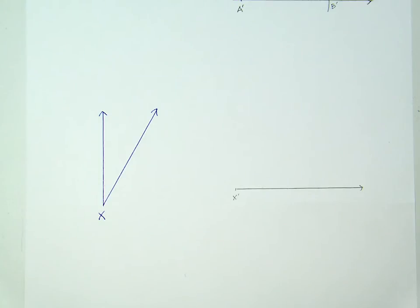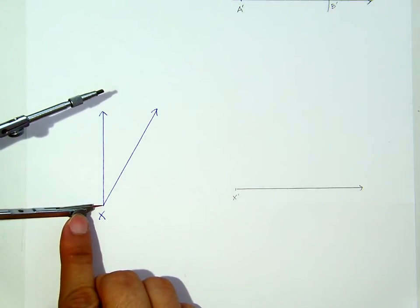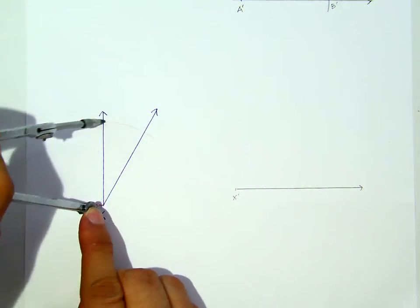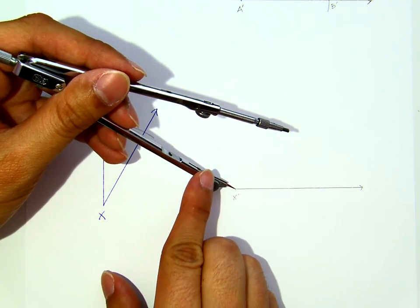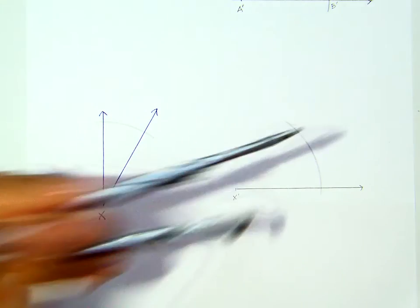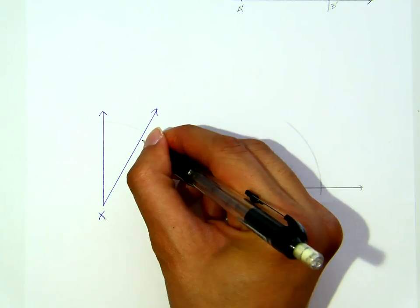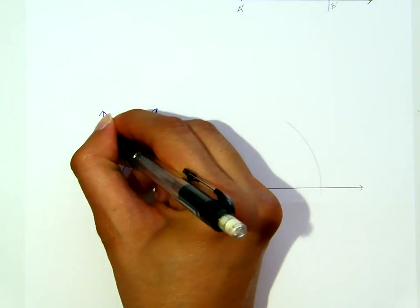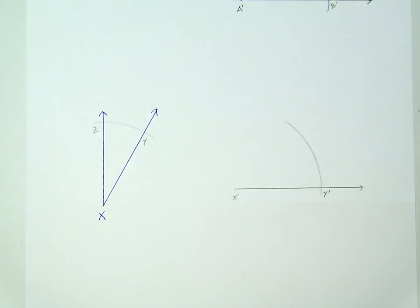Now then, I will use my pivot point, a pivot leg of the compass to create an arc on that angle, which I copy here. Now, if I call this maybe Y and this is Z, then I can call this my Y'.